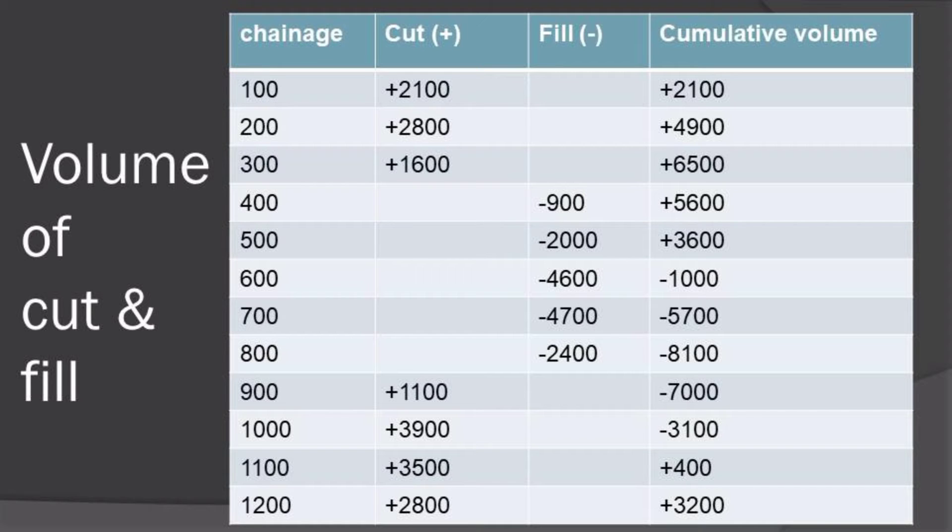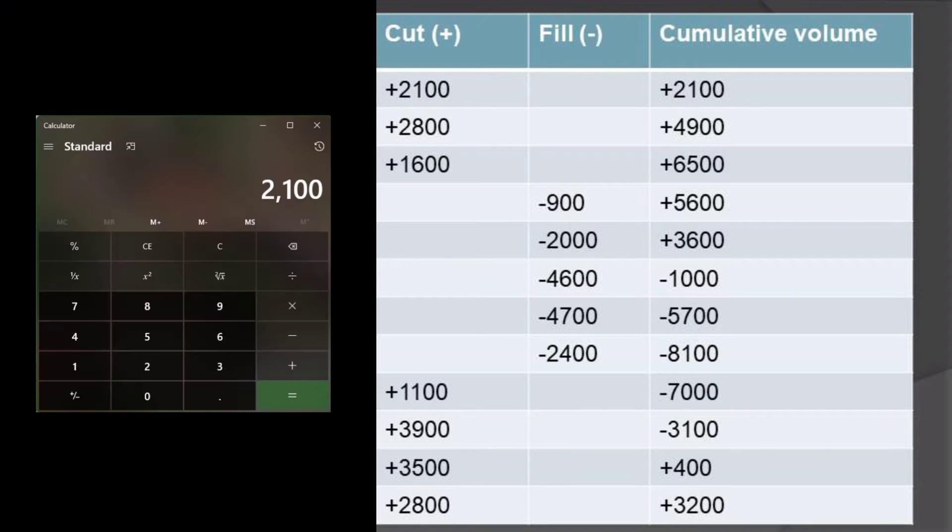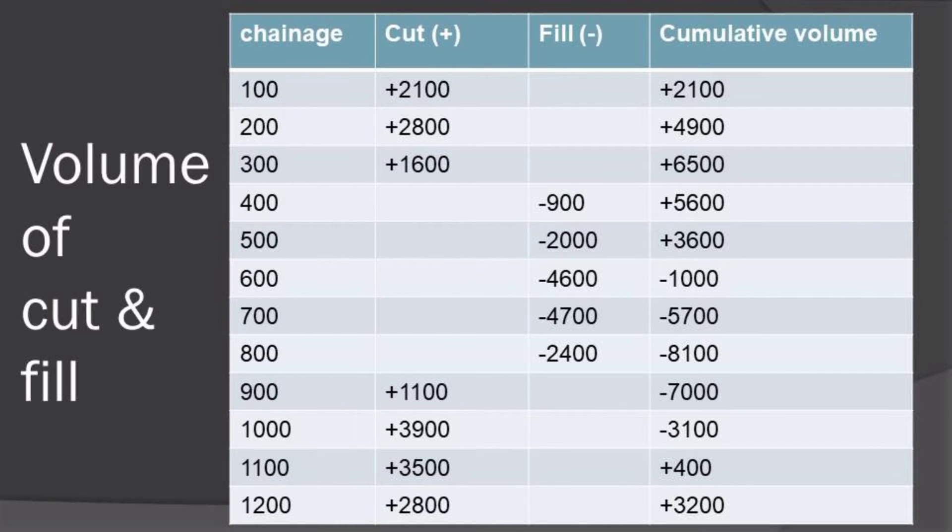Lastly on our fourth column we calculate the cumulative volume at each single chainage starting with the positive 2100 that we had begun with. We add for the cut and we subtract for the fill, so I have illustrated that as you can see in the diagram. By use of calculator you will get the correct answer, so you do the same until you finish.